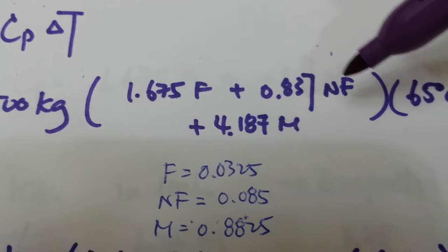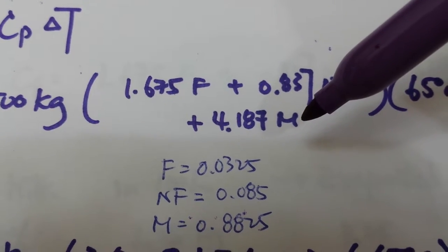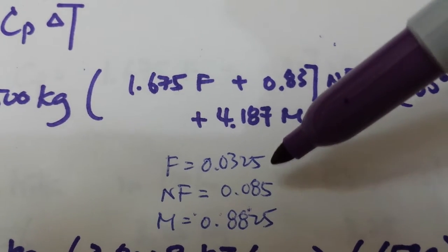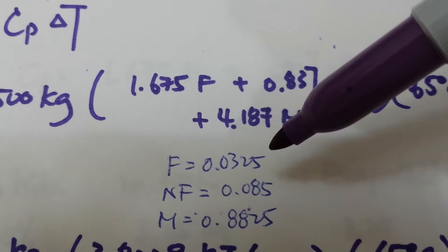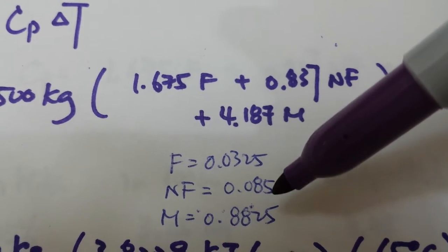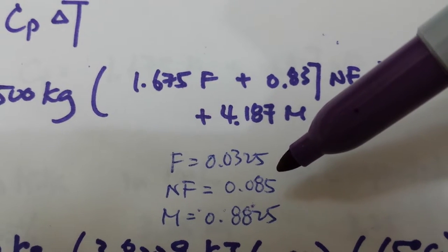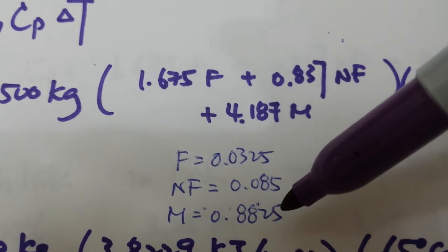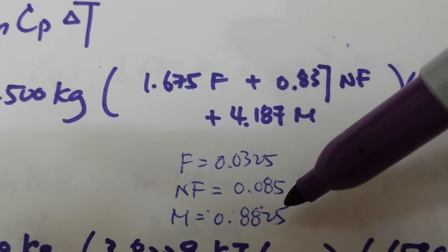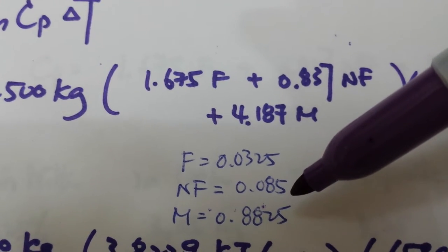Based on this is a homo milk, we know that it has 3.25% fat. This is the level of non-fat solids such as lactose and milk protein, and this is the level of just pure water in the system.